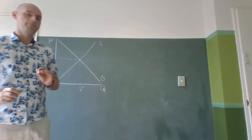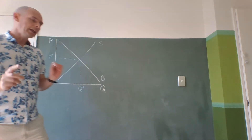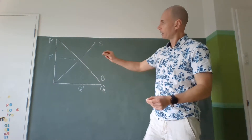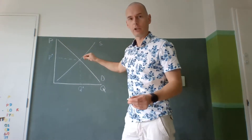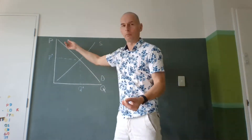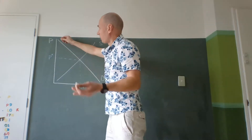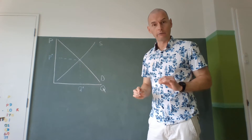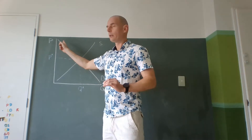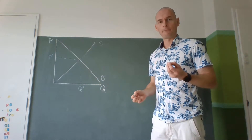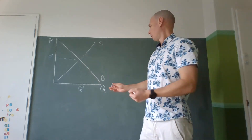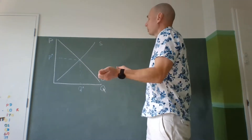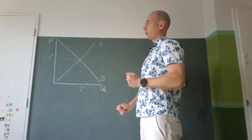Let's remember what exactly is the demand curve and what does it represent. Every point on the demand curve is a customer — a person, a business, doesn't matter. Each point represents the maximum willingness that the customer is willing to pay. And the greater is the quantity, the lower is the willingness to pay. That's ultimately the reason why the demand curve slopes down.